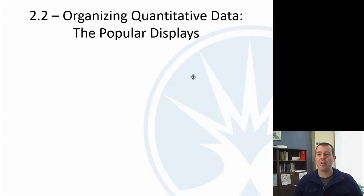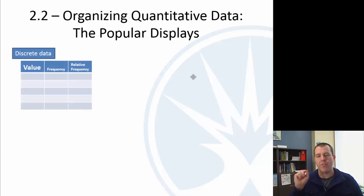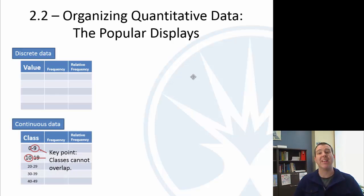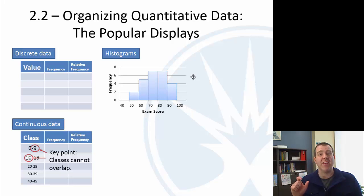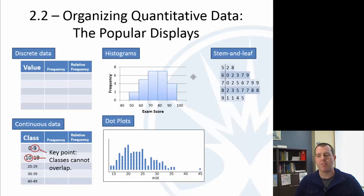Alright, let's summarize here from 2.2 the quantitative data. We've got discrete data for our tables where the column on the left is just the individual values. If you have continuous data, you have these classes. The key point there is that the classes cannot overlap. We have histograms, which are bar graphs. The key is that the bars don't have gaps between them because they're right next to each other. The values are right next to each other. So 69 is right next to 70. We have stem-and-leaf plot, very similar to that. We have the dot plots, and then we talked about some of the distribution shapes: symmetric, uniform, skewed right, and skewed left. So that is it for this video.